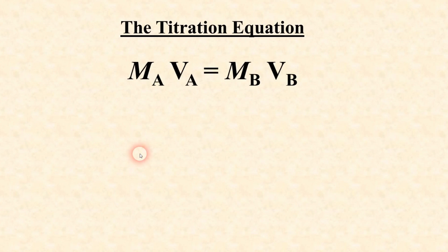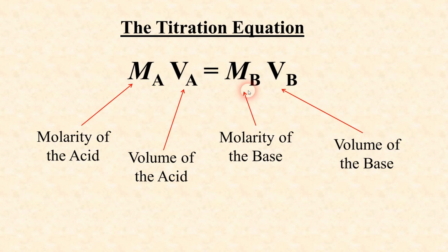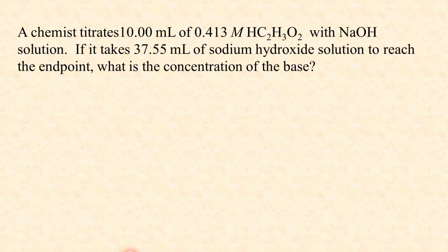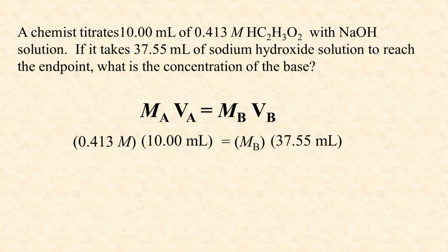Another equation that will not be given to you is what I call the titration equation. At the equivalence point, the molarity of an acid times the volume of the acid equals the molarity of the base times the volume of the base. If you know any three of these, you can calculate the fourth. For example, 10 milliliters of 0.413 molar acetic acid were titrated with 37.55 milliliters of sodium hydroxide solution to reach the endpoint. Plugging these into the titration equation gives a molarity of 0.110 moles per liter for the sodium hydroxide base solution.